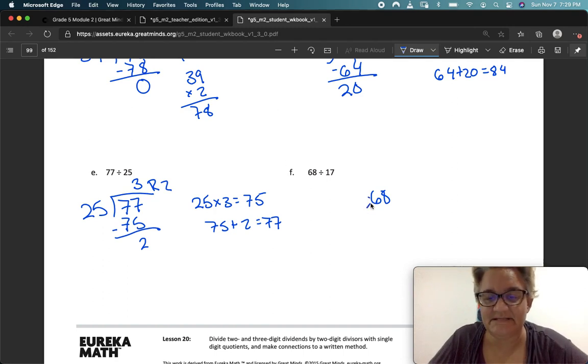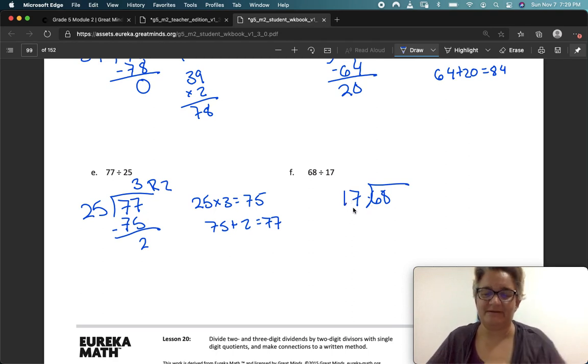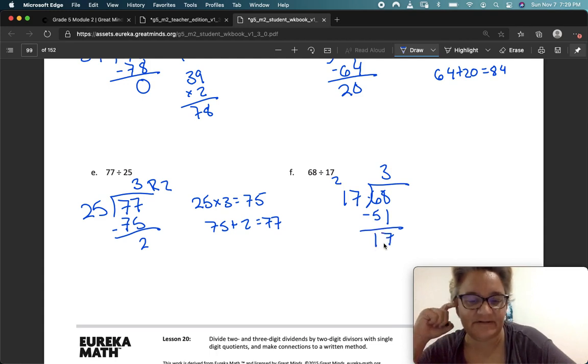68 divided by 17. I'm going to round up to 20. So 20, 40, 60. I'm going to try 3. That's a good estimate. 3 times 7 is 21. Carry the 2. 3 times 3 is 3, 4, 5. And what do I have left over? Uh-oh. I have 17 left over. Well, that means I guessed wrong. So I'm going to have to go back.